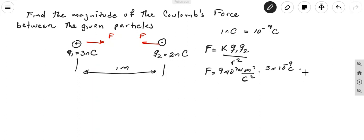Times the charge 2, that is 2 nanocoulombs, so it's 2 times 10 to the negative 9 coulombs, all divided by the square of the distance between the two particles. There is one meter.